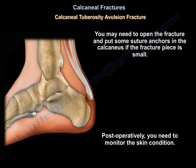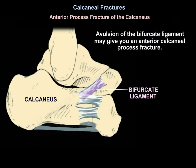You may need to open the fracture and put some suture anchors in the calcaneus if the fracture piece is small. Postoperatively, you need to monitor the skin condition. One entity worth mentioning: avulsion of the bifurcate ligament may give you an anterior calcaneal process fracture.